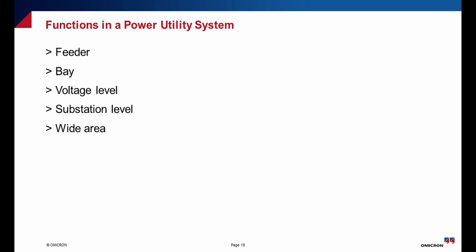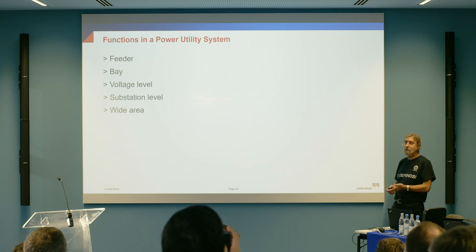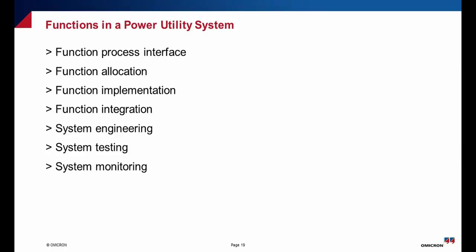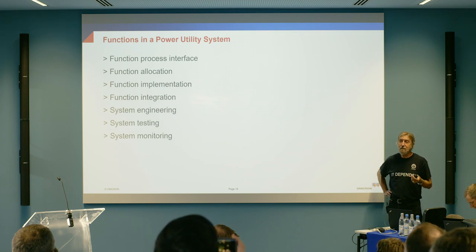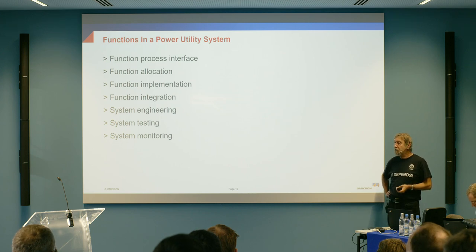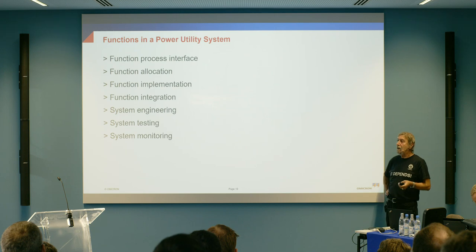Many of these functions can be implemented at different levels in the power utility system — at the feeder level, the bay level, the voltage level, the substation level, or at the wide area. When we talk about what kind of functions we need, first of all we have to have a process interface, because any protection, automation and control function needs information about certain parameters of the electric power system and needs to know the status of the switchgear in order to determine the real-time topology of the grid and adapt its behavior for changing system conditions.